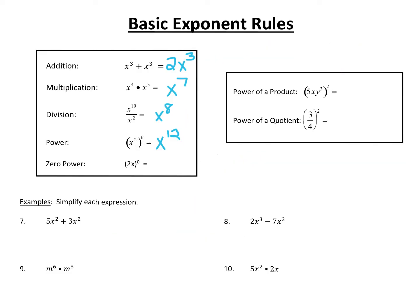Anything raised to the zero power is equal to 1. You can take out your calculator and try it — 8 to the zero power equals 1, 10 to the zero power equals 1. So if you take 2x and raise this whole expression to the zero power, it's equal to 1. Anything to the zero power equals 1.